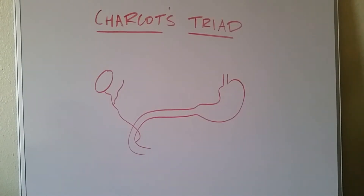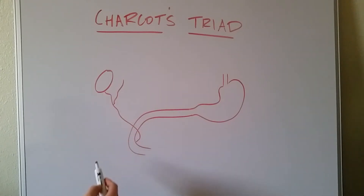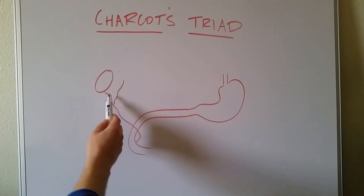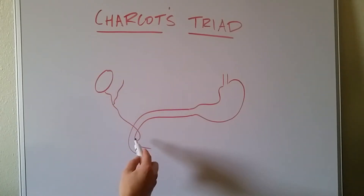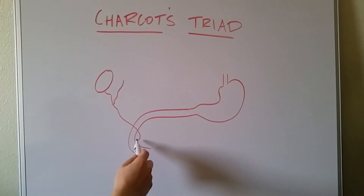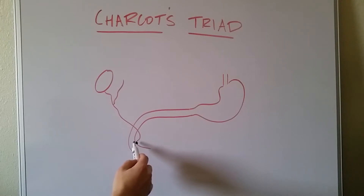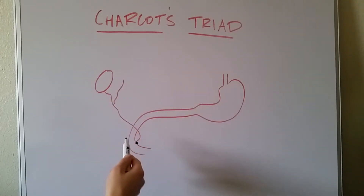Now, ascending cholangitis occurs when there's some blockage or some reason for a stasis of bile in this common bile duct. Most commonly it's following subsequent to a gallstone. So we have a gallstone from the gallbladder that travels down, and let's say it gets lodged right here at the ampullae of Vater. This bile coming down from the gallbladder and the liver is going to stop — stasis.